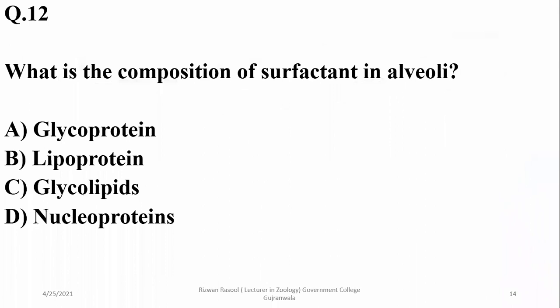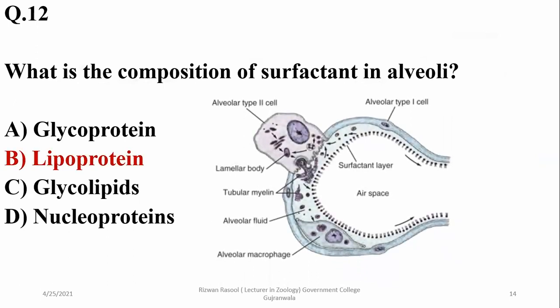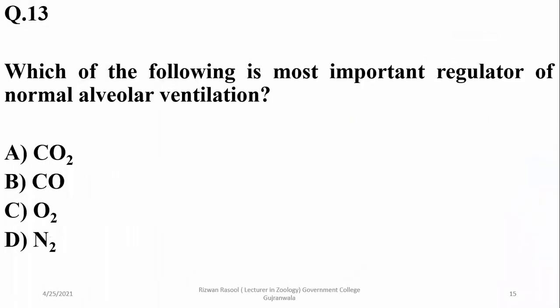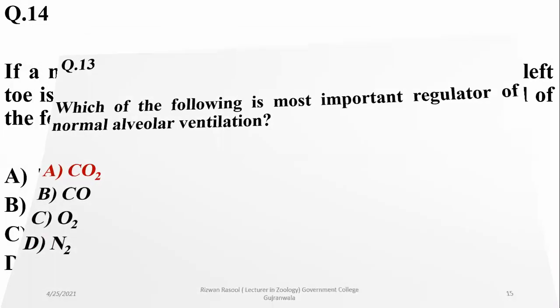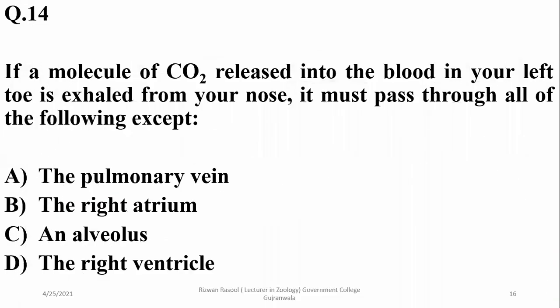Question twelve: the composition of surfactant in alveoli is lipoprotein, so beta is correct. Question thirteen: the most important regulator of normal alveolar ventilation is carbon dioxide gas, which is always present in higher concentration in both oxygenated and deoxygenated blood. Oxygen becomes more important during exercise, stress, or extreme breathing.